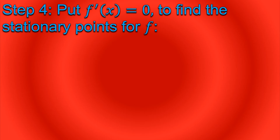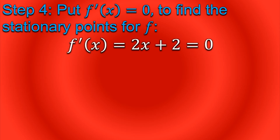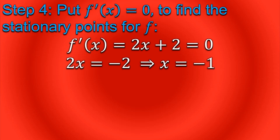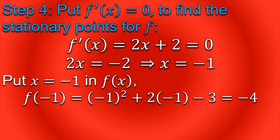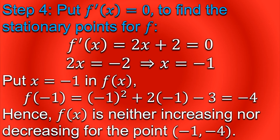Step four is for finding the stationary points. We find the stationary points by putting f'(x) = 0. By doing so, we obtain that at x = −1, f(x) is neither increasing nor decreasing. A stationary point has both x and y coordinates, so we put x = −1 into f(x) to obtain the y-coordinate. Hence, f(x) is neither increasing nor decreasing at the point (−1, −4).